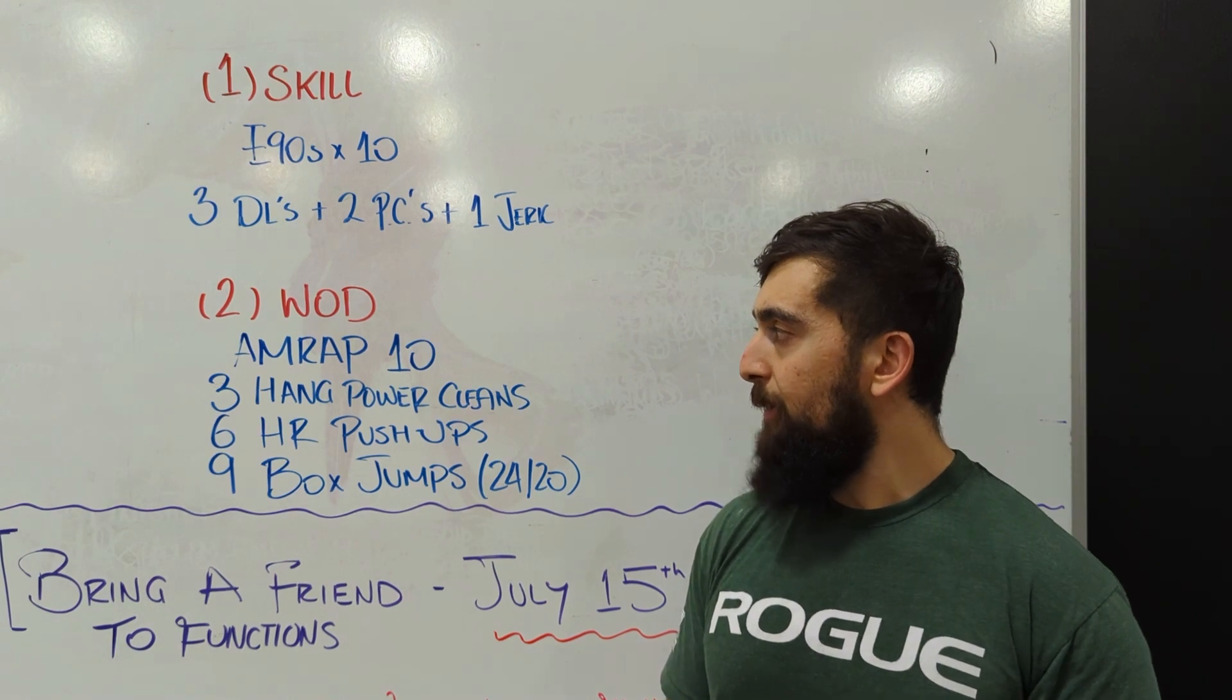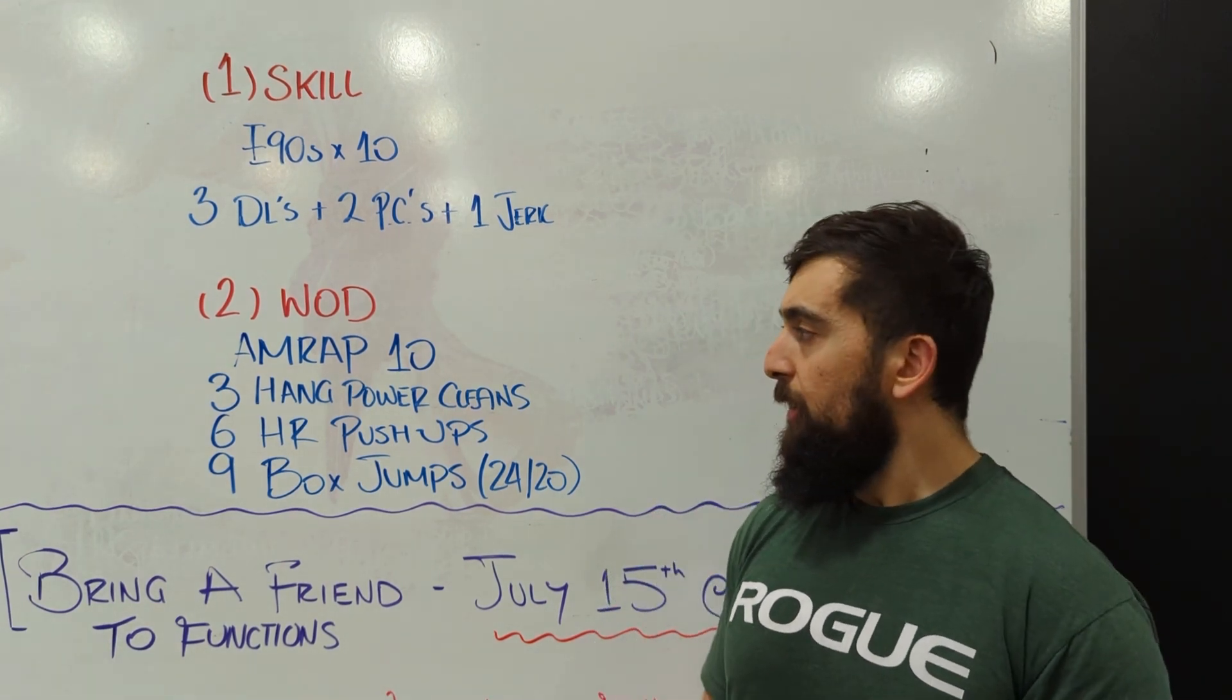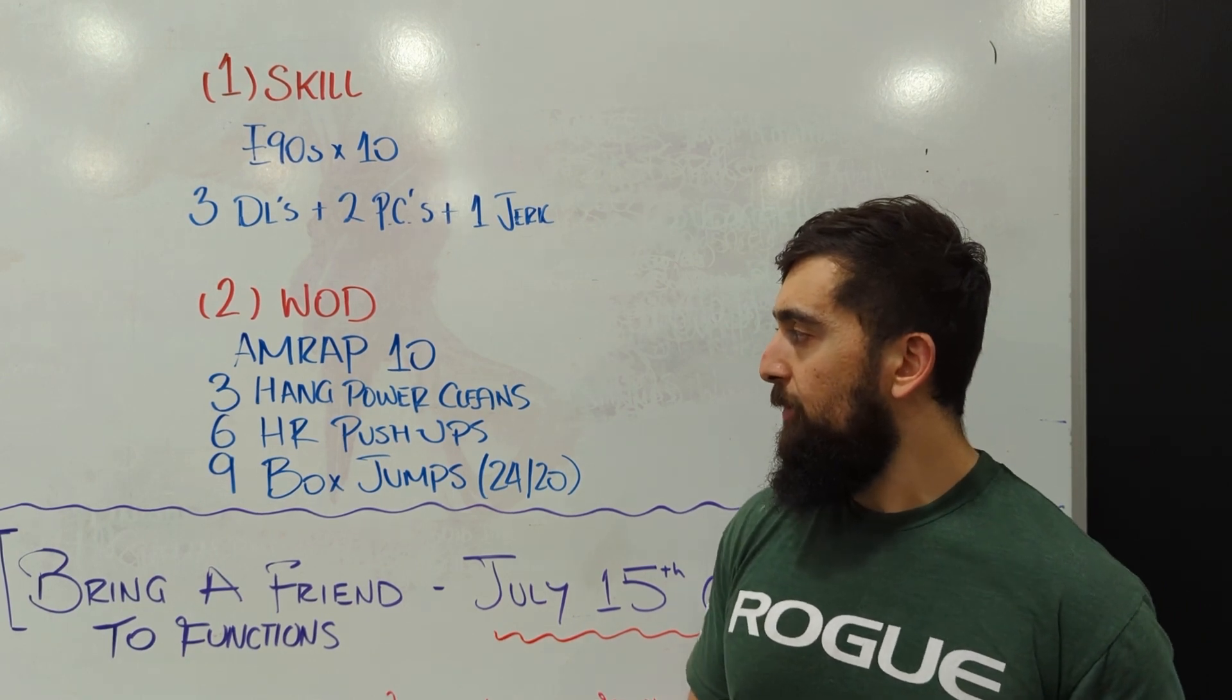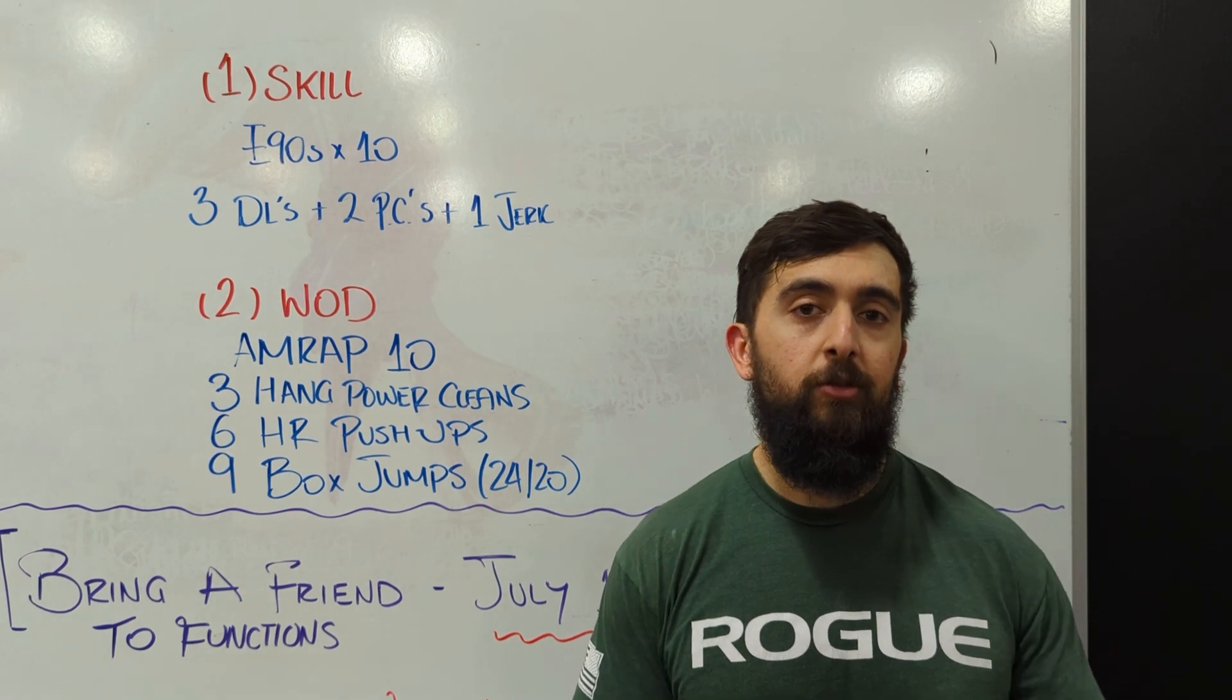After that in the workout we got some more hang power cleans. We're going to go a little bit heavier, 185, 125 for the weight. Three reps there, six hand release push-ups, nine box jumps, and we're going to repeat that circuit for ten minutes.